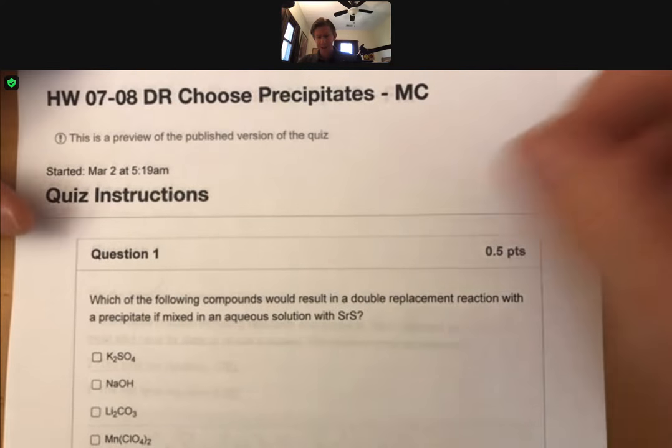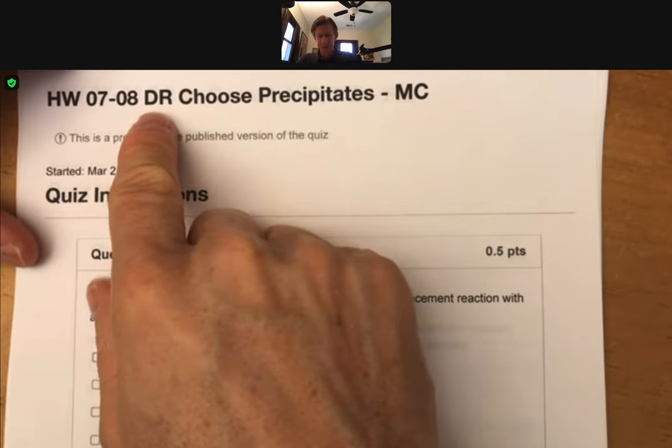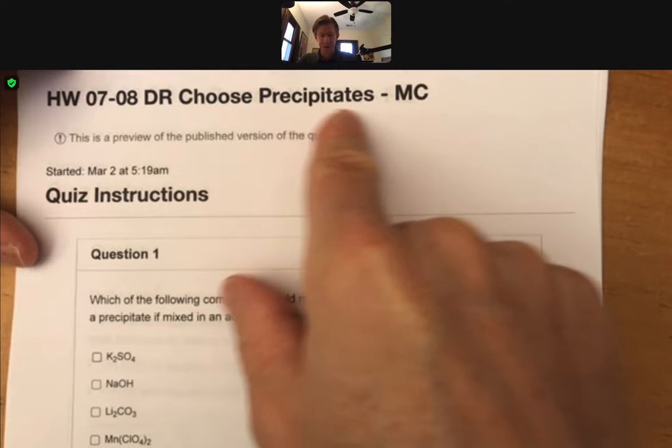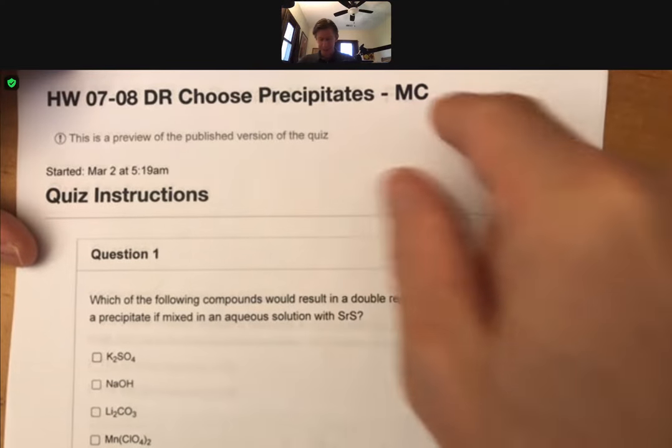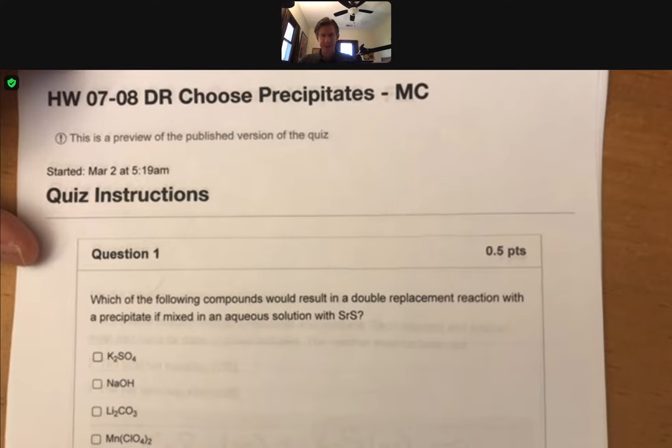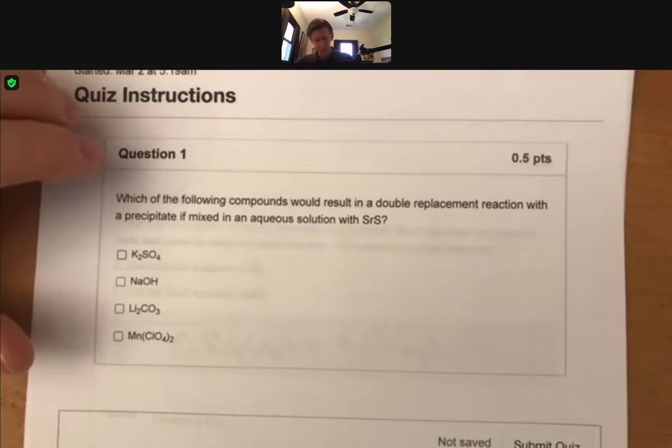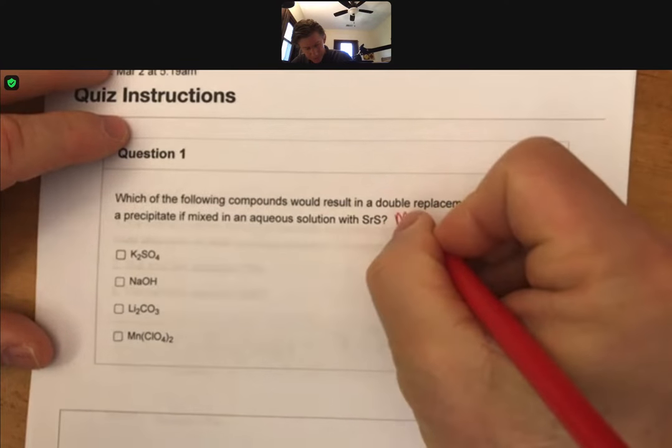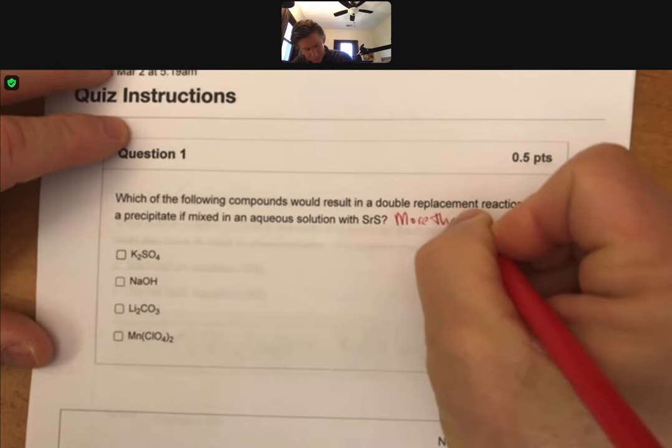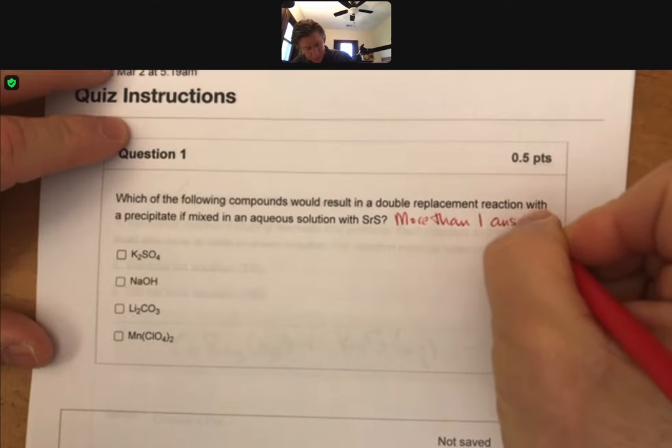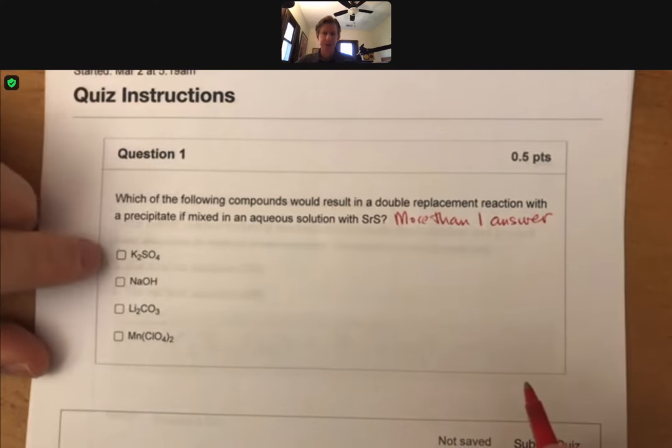This one, you can tell by the name, is double replacement, choose precipitates, and it's a multiple choice question. And when you look at the boxes that are squares, that means there can be more than one answer. And if you see circles here, that means there's only one answer.